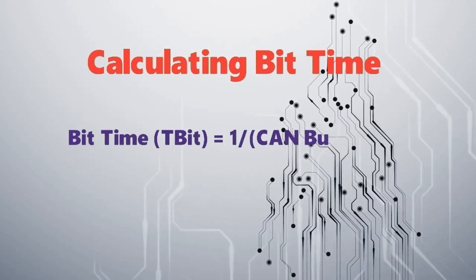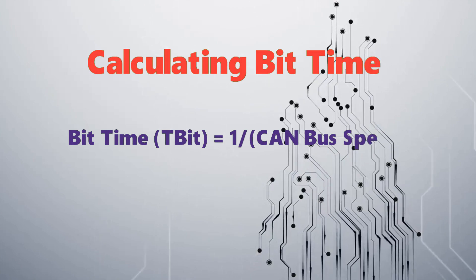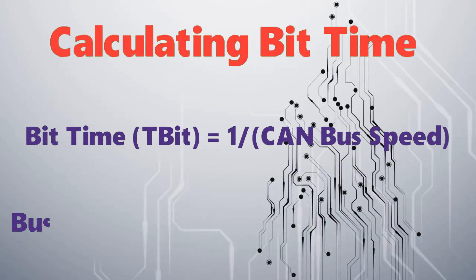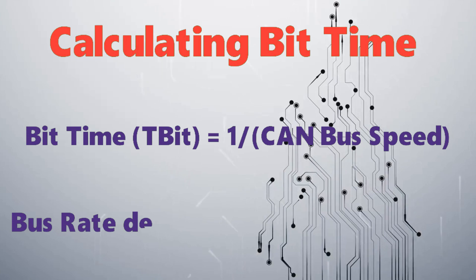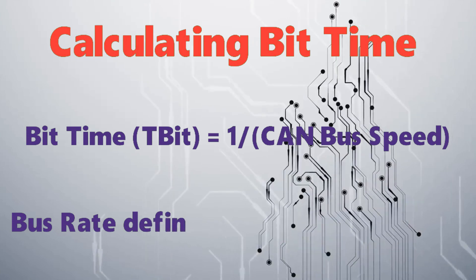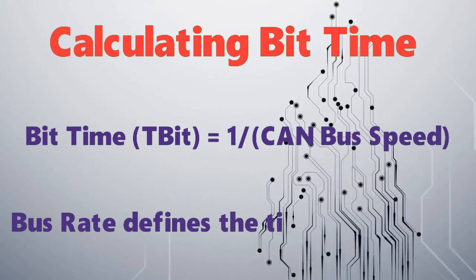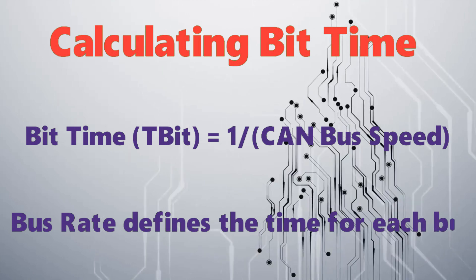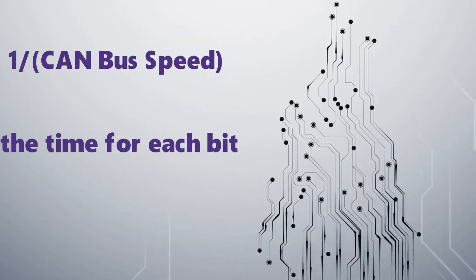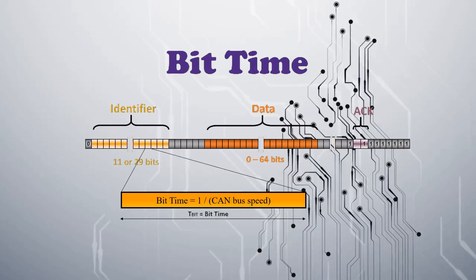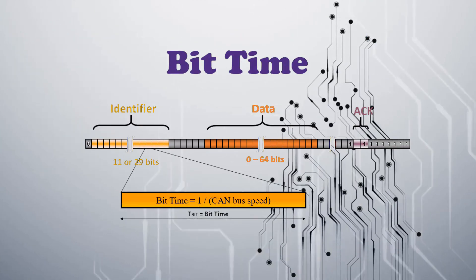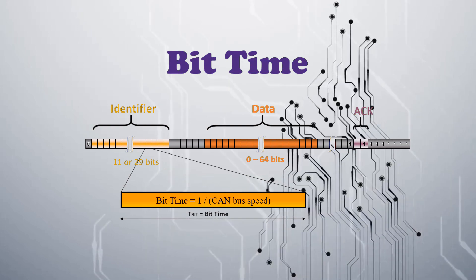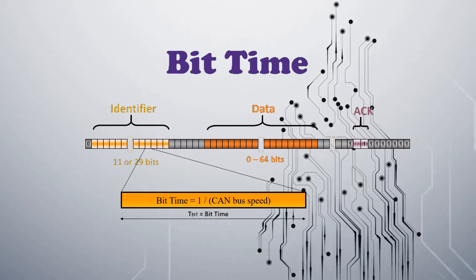Bit time, that is T_bit, can be calculated by one divided by the CAN bus speed. Here the bus rate defines the time for each bit, so bit time is equal to 1 / CAN bus speed.